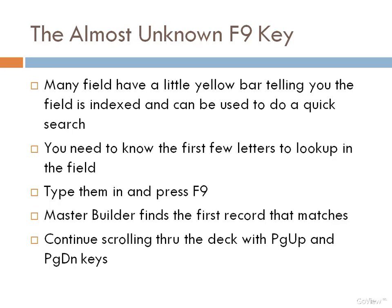You may have been wondering what all those little yellow bars are on the left side of some of the fields when you're working through the system. These are index fields. You can type in the first few letters of whatever's in that field and press F9 to get to that record. You can also continue scrolling through the records based on that field using the page up and page down keys.